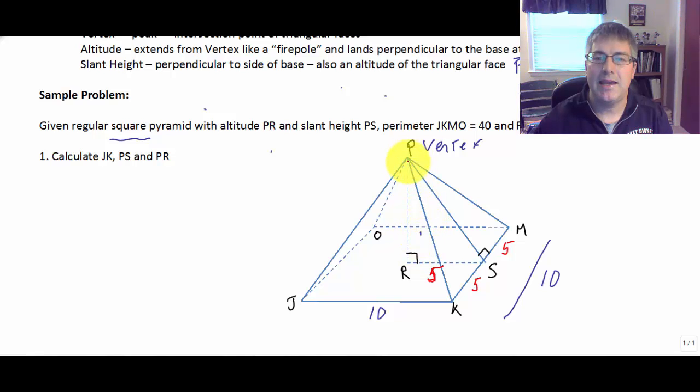If PK, our edge here is 13, which is given to us, then we have a right triangle, a 5, 12, 13. But out on the face, the 12 here is the slant height. So PS is 12, our slant height is 12. So we've already answered a bunch of our questions.